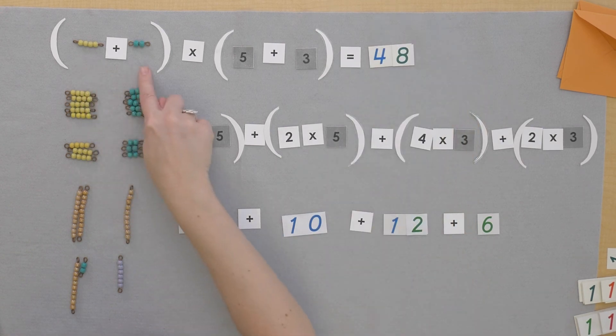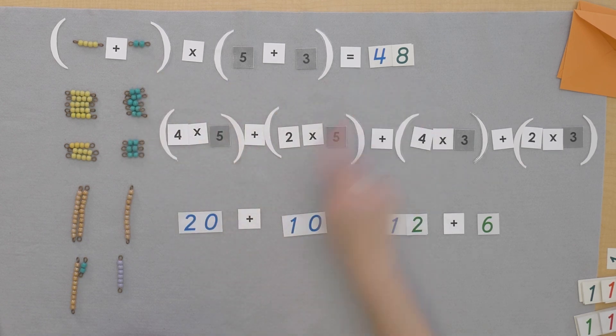So what does this equal all together? 20 plus 10 plus 12 plus six equals 48. So four plus two times five plus three equals 48.